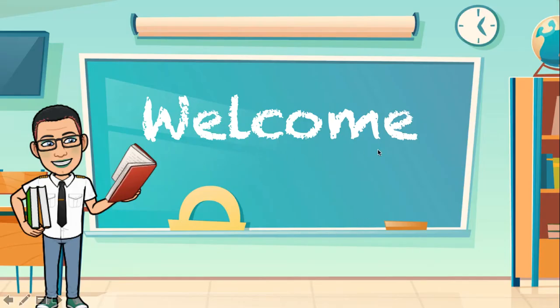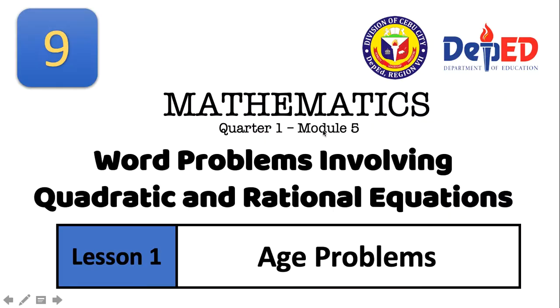Hello and welcome to my classroom. I will be helping you with your lesson in mathematics. This is module 5 for the first quarter with subject in mathematics for the grade 9 level, and it's all about word problems involving quadratic and rational equations. For lesson 1, we are going to take up problems related to age.